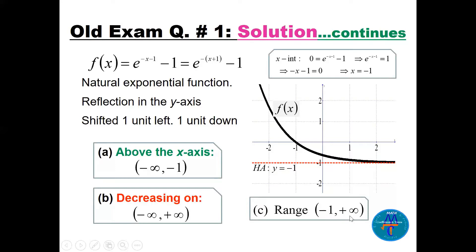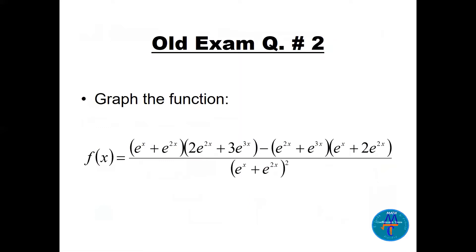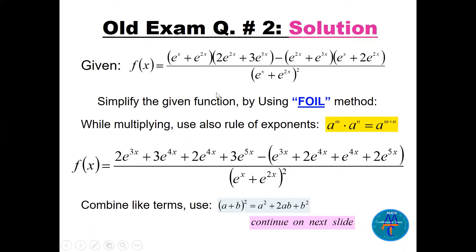Question two: we need to graph a large complex function, but first simplify it. Multiply using the FOIL method or distribution. When multiplying exponentials with the same base, add the powers. For example, e^x times e^(2x) gives e^(3x). Continuing: e^x times e^(3x) gives e^(4x) with coefficient 3, and e^(2x) times e^(2x) gives e^(4x) with a factor of 2, then e^(5x) terms appear.